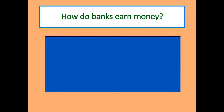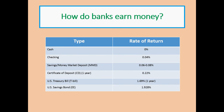Right now, recording this on June 6, 2018, interest rates are not very high across short-term savings vessels. Cash under the mattress earns nothing. A checking account pays 0.04%. Savings and money market accounts, certificates of deposit, Treasury bills, and savings bonds are all quite low as well. But there are lessons to learn: banks offer interest to get our money, and the longer we go without our money, the more they're willing to pay.